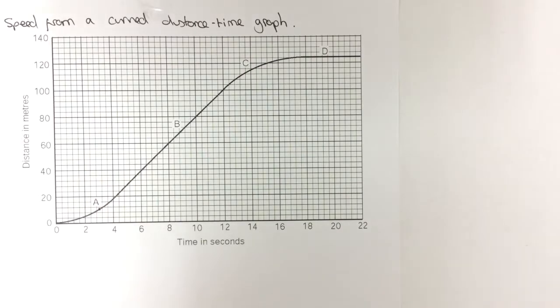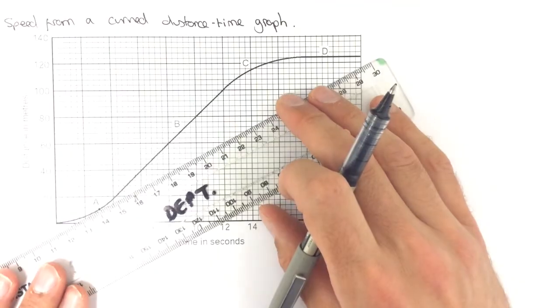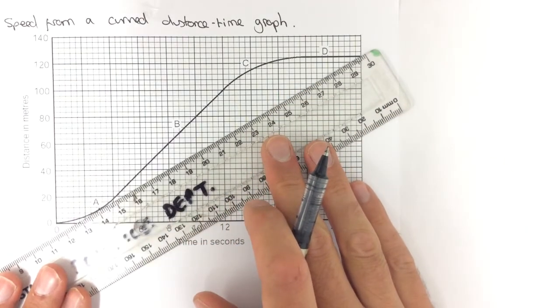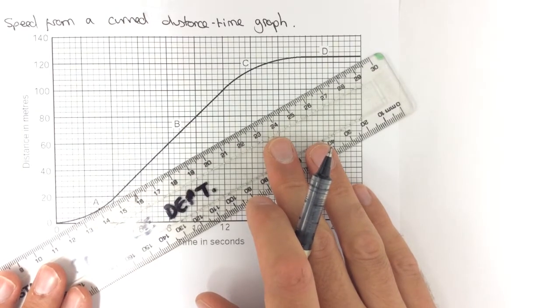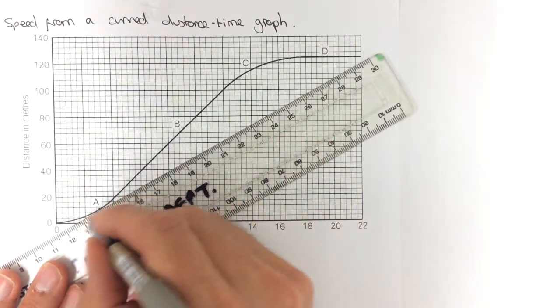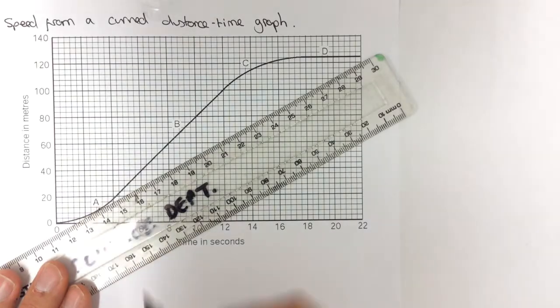So, the process there is that you need to draw in a line called a tangent to the curve. And the idea is to put a ruler alongside the line, which has the gradient of the line at that point. So, adjusting this, that looks reasonable for the time of 3 seconds. And you'll notice that it should just touch the curve at the one point.